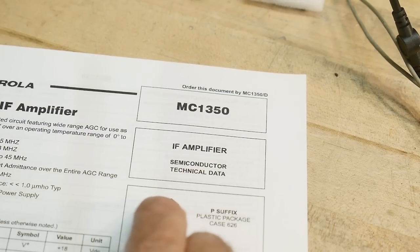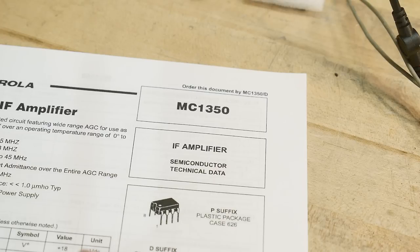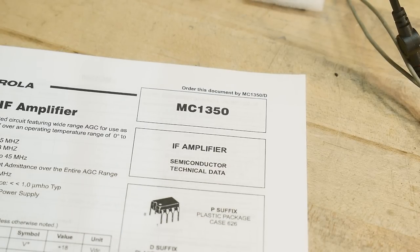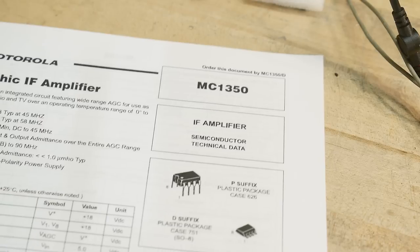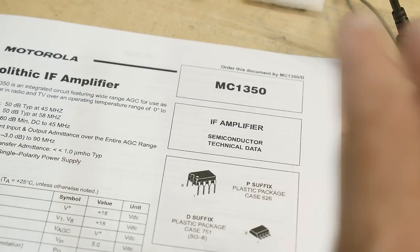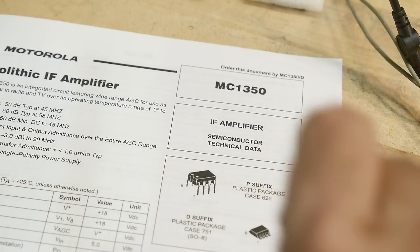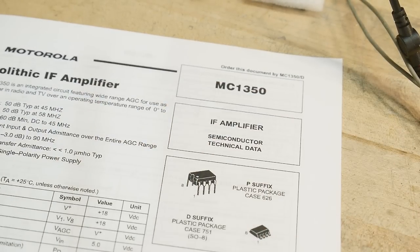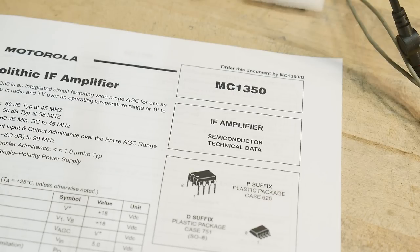The cool thing about this is it has what they call an AGC, automatic gain control. Well, it's not really automatic gain control. It's a voltage-controlled amplifier. You could put it in a feedback loop, measure your amplitude and generate a DC voltage and bring that around, and you could turn it into an AGC, but it doesn't do it all by itself.